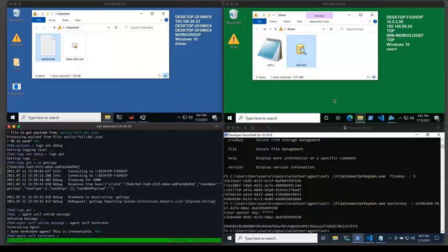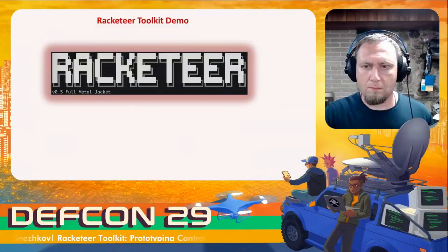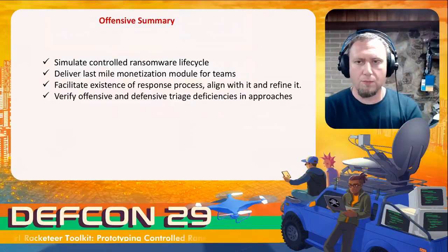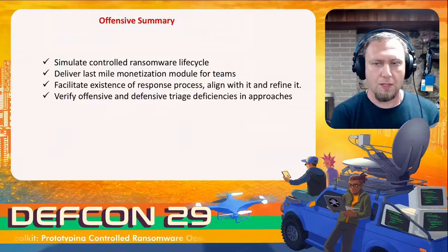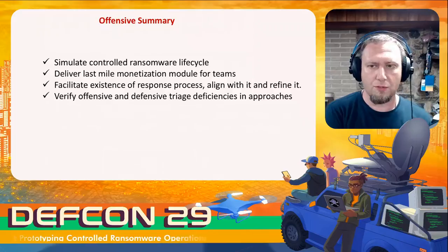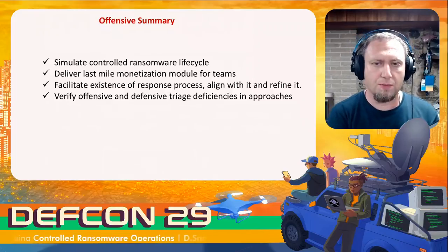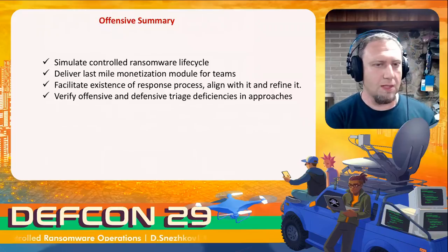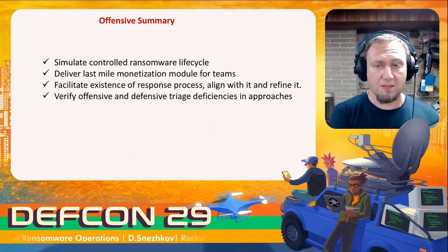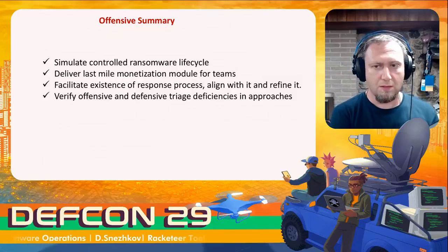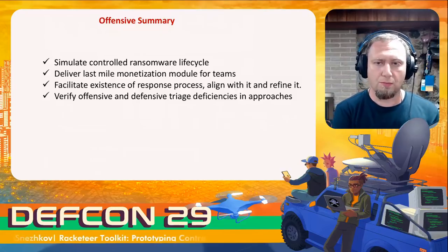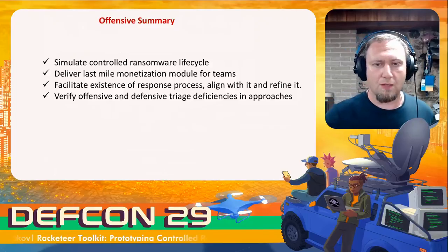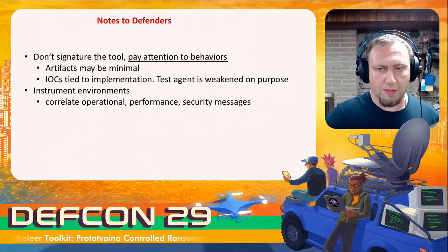This is the Racketeer Toolkit. In summary, we are able to simulate the lifecycle of controlled ransomware, maintain SLA and uptime on the network, deliver the last-mile monetization module for teams that need it, and plug into the response process either to support it or kick it off. We can also learn more about ransomware deficiencies and capabilities.